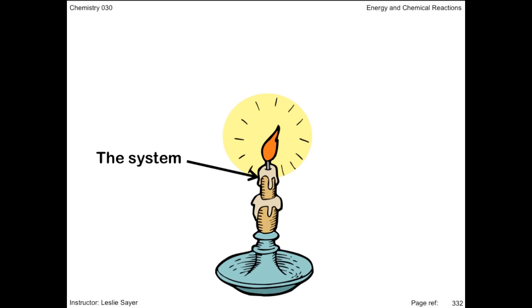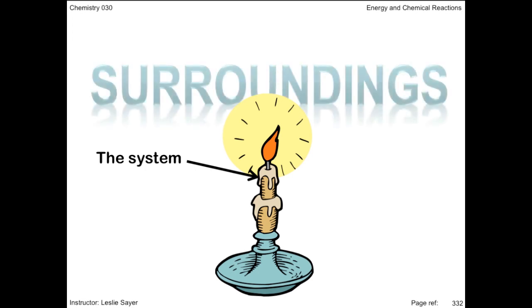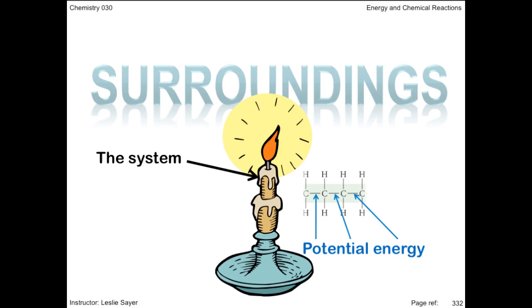A couple of terms. The burning candle is called the system, and the air around it is called the surroundings. The energy tied up in the bonds between the atoms of a substance is called potential energy. Much of the potential energy is released during the process of combustion and absorbed into the particles surrounding the system.